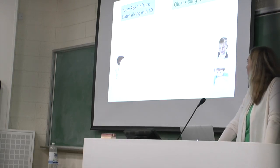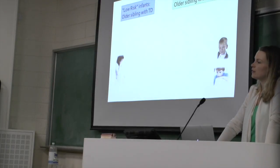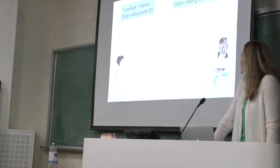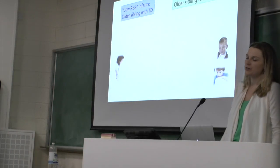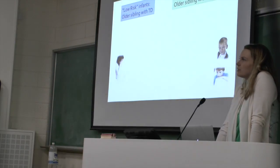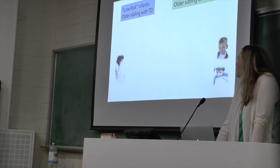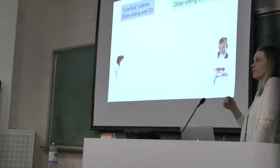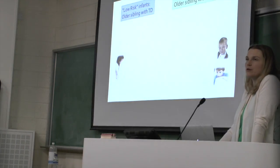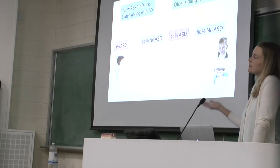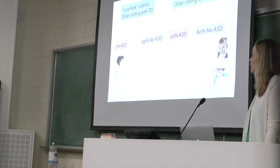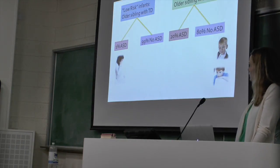Because of this progression of research, what we've been doing in our London centre — and increasingly across the US and Europe — is working with what we call high-risk populations. Predominantly these are infants who have older siblings with autism, because we've known for a while that autism runs in families. If you have an older sibling with autism, you have about a 10 to 20% chance of developing autism yourself. In this design, we work with families with an infant who has an older sibling with autism and follow them from early infancy through to age 2, 3, 4 or beyond.